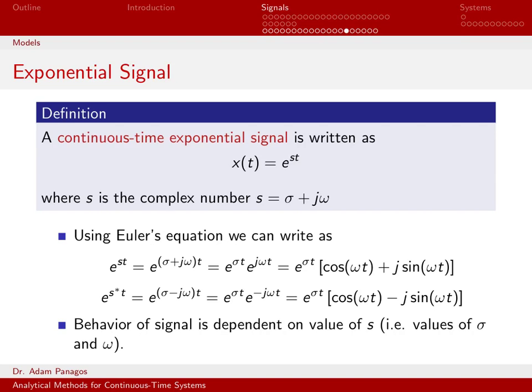Just for the sake of computation, which we'll need here in just a minute, we could also compute what is e to the s conjugate of t. Well, we know how to take the conjugate of a complex number. We replace all the j's with minus j's, so that turns into sigma minus j omega, which then turns into e to the sigma t times e to the minus j omega t.